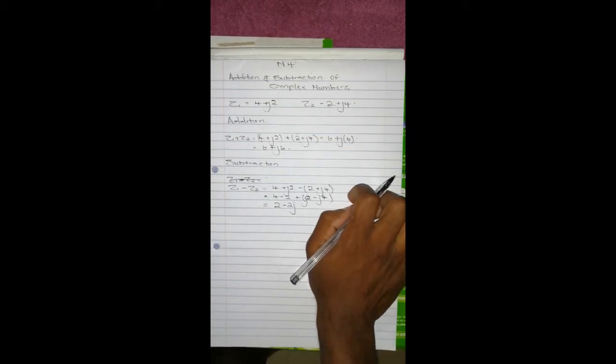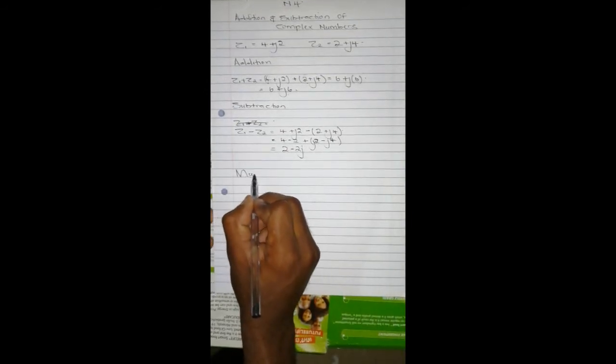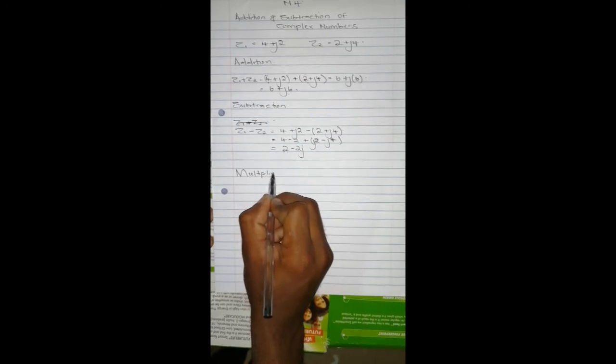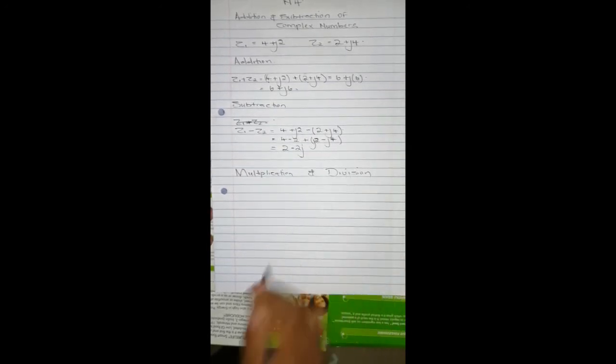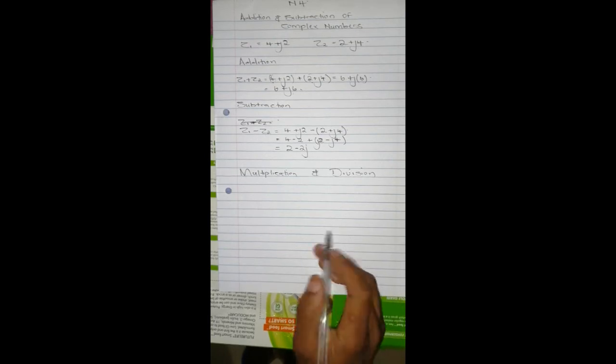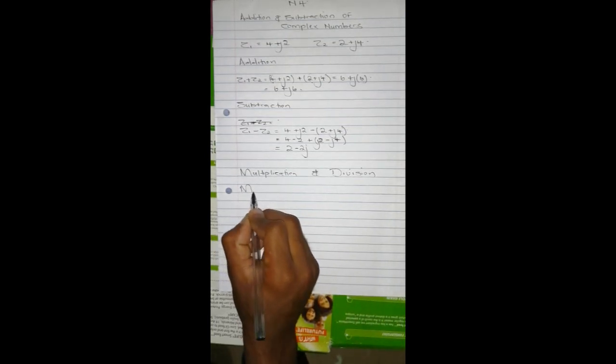That's about it with subtraction. Moving on to other operations which are multiplication and division. With these two it's more convenient to use the polar form to perform these operations, rather than the rectangular form, but both can work.